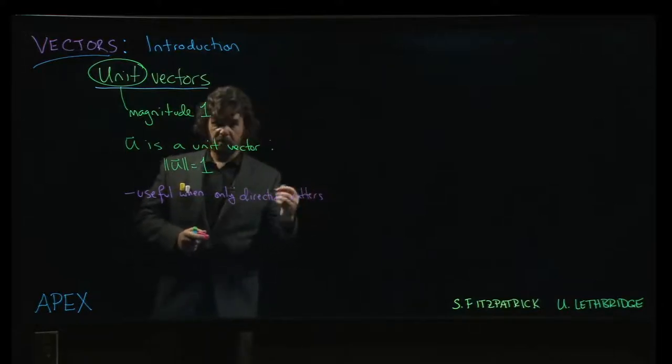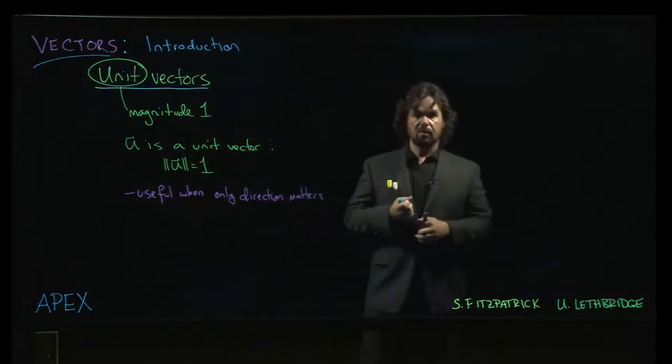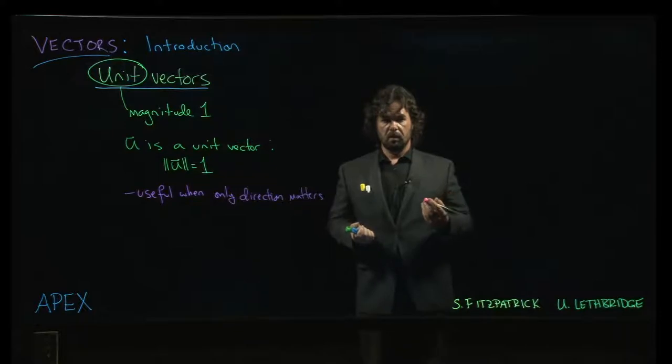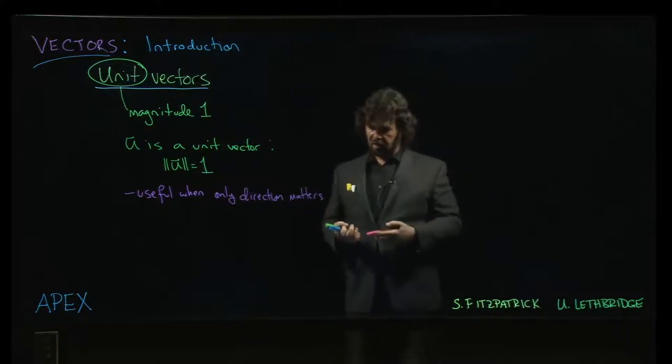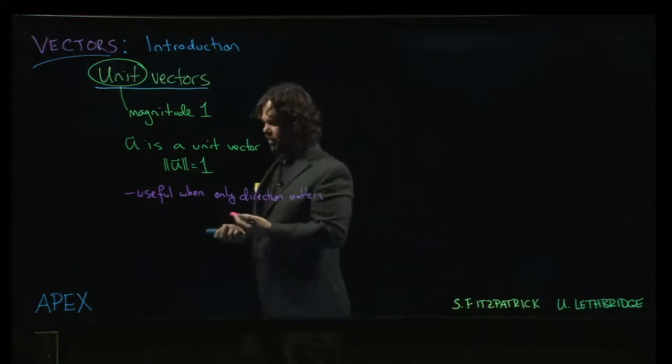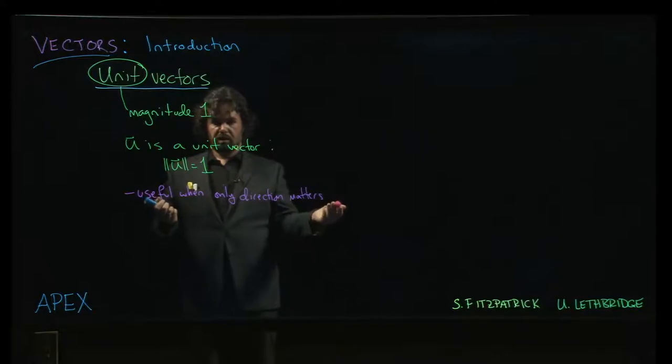And these are mostly useful when only the direction matters. We want to use a vector to specify a direction. The magnitude of the vector isn't actually important for the thing that we're interested in. And so we often use a unit vector so we're focused on the direction, and we sort of standardize the magnitude so everyone is agreeing on the vector that we're using.